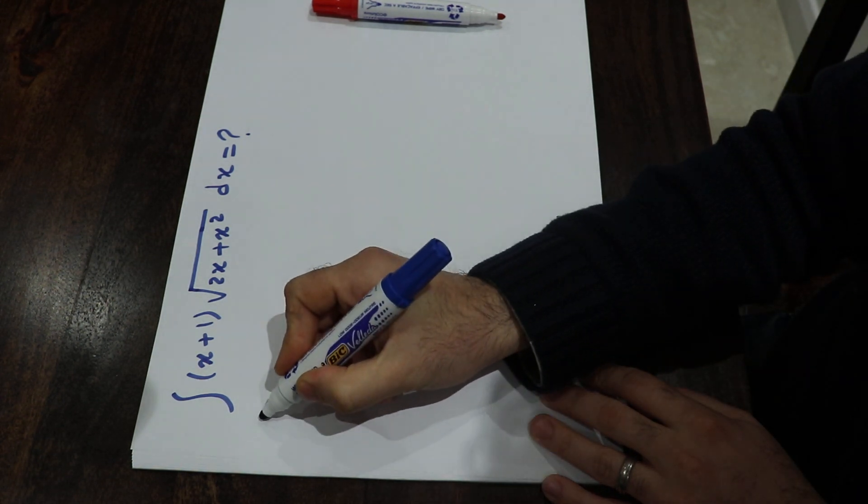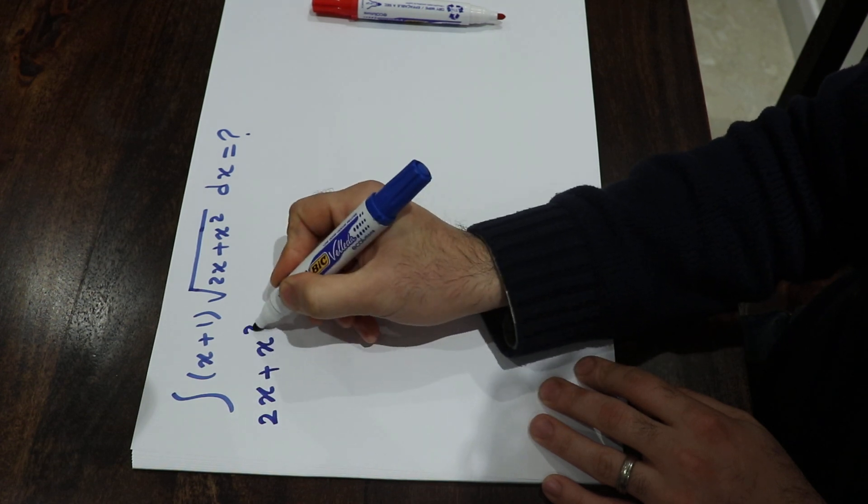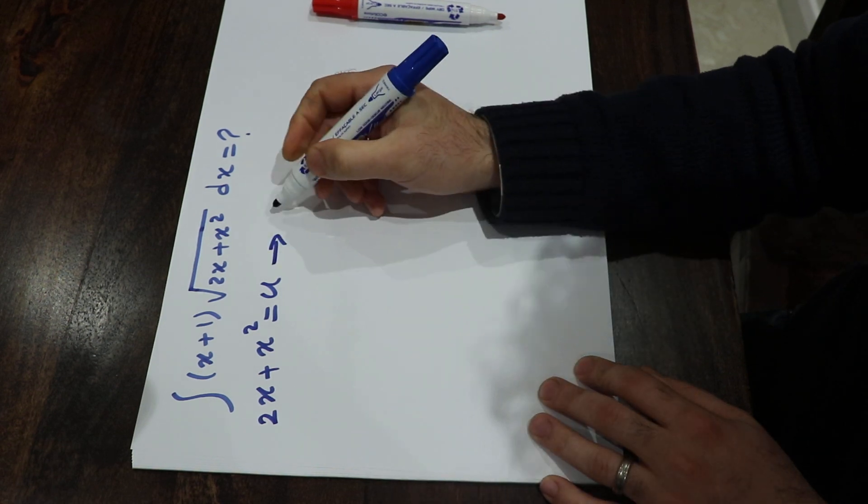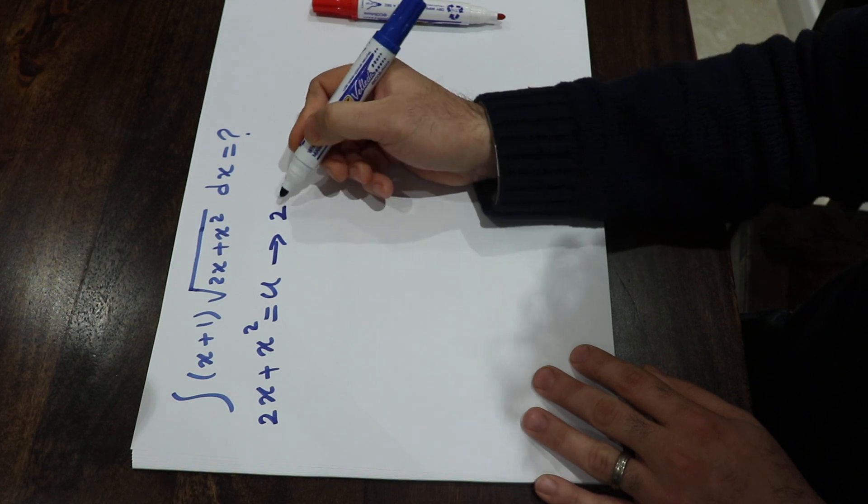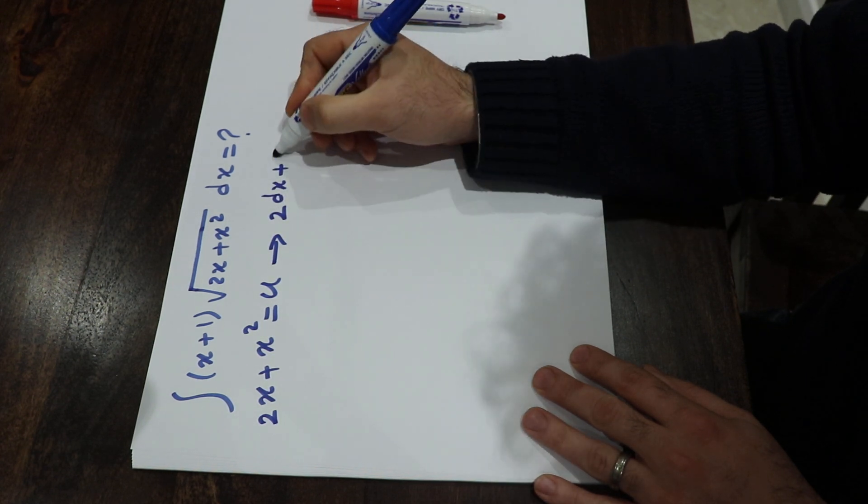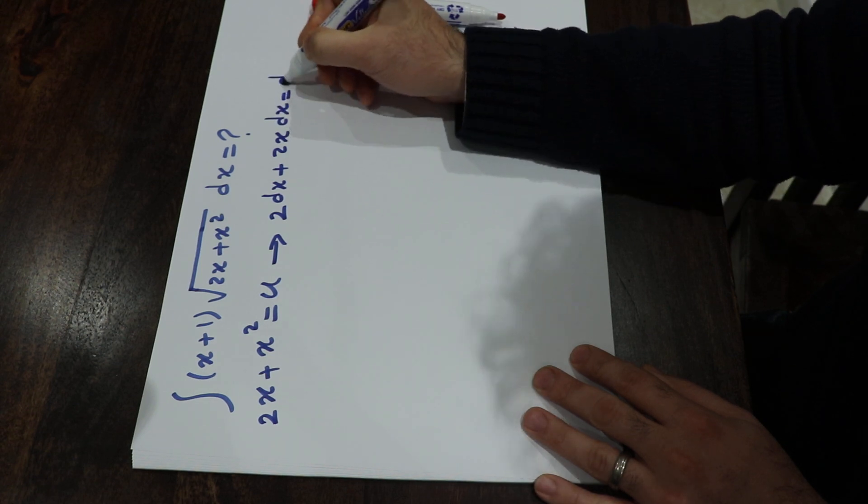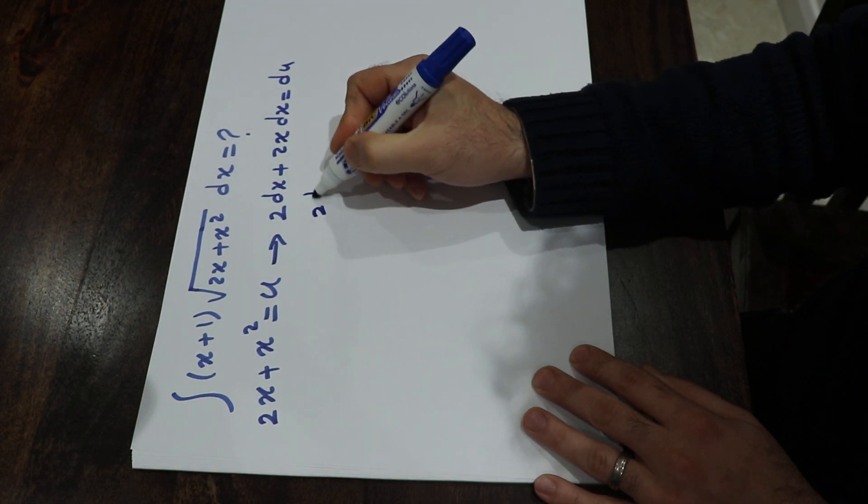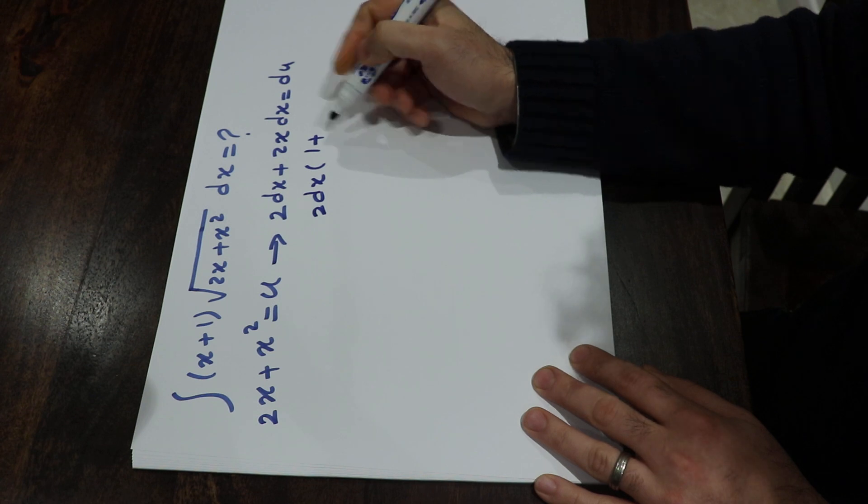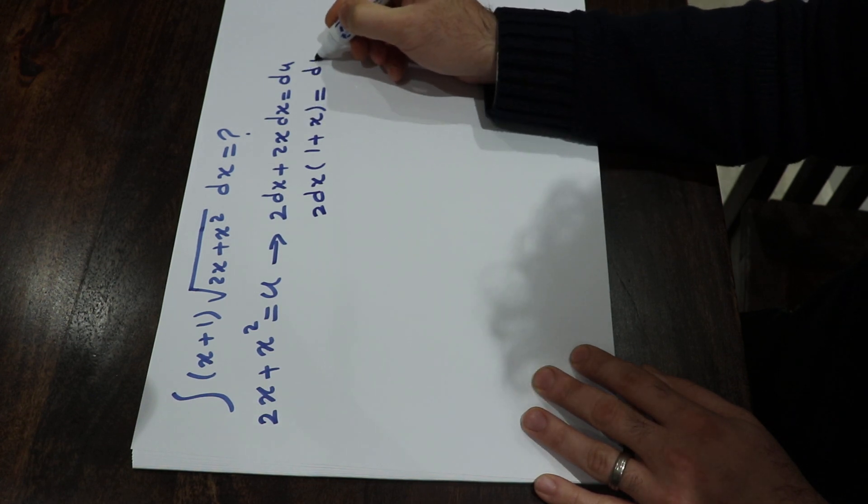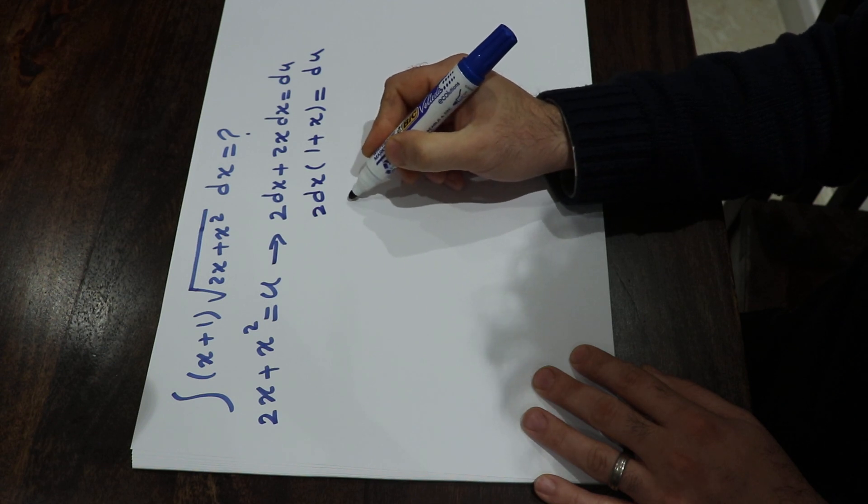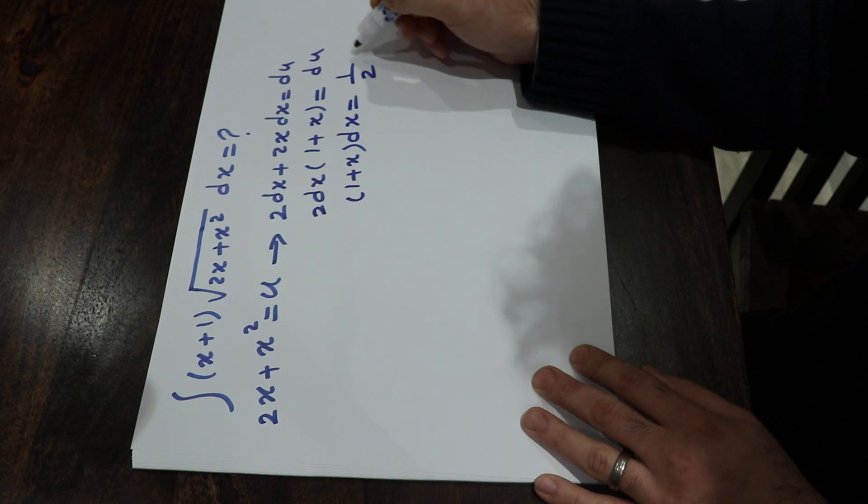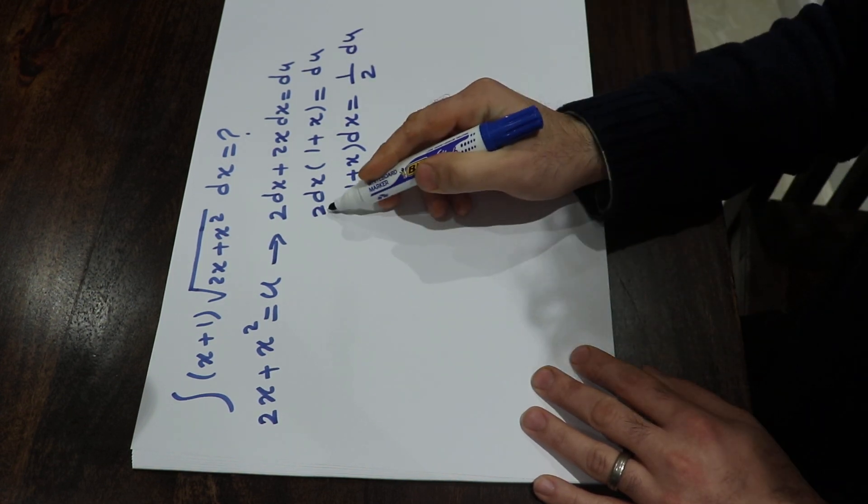What you need to do is to define 2x plus x² equal to u and then take the derivative from each side of this equation. That means 2dx plus 2x dx is equal to du. In other words, if you factor 2dx here, 2dx times 1 plus x will be equal to du. In other words, 1 plus x dx will be equal to 1 divided by 2 du. So I just divide everything by 2 here.